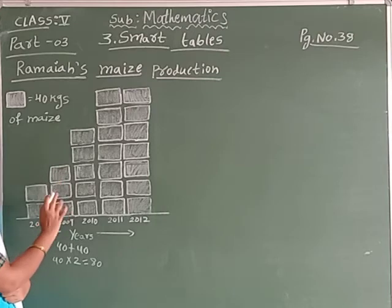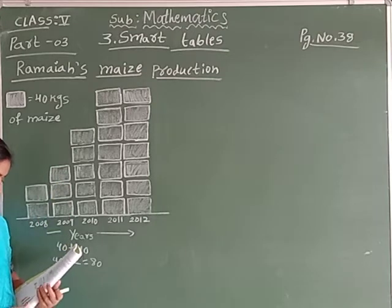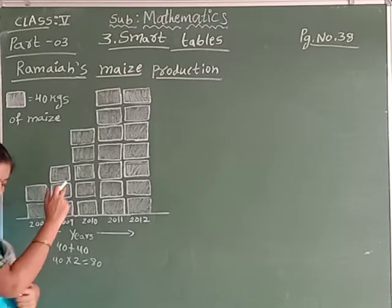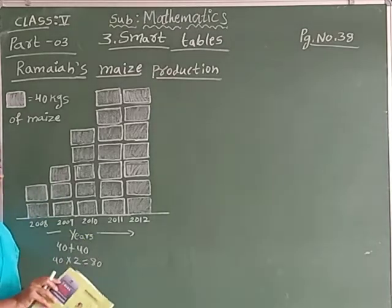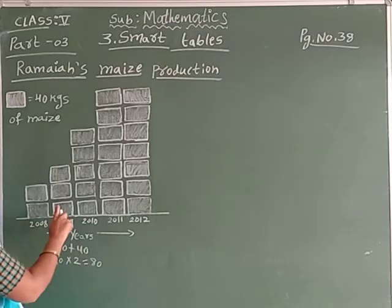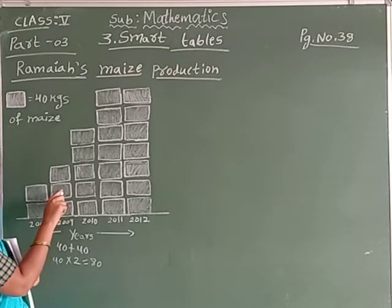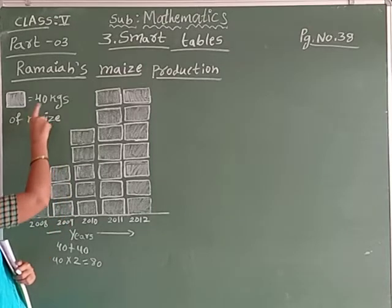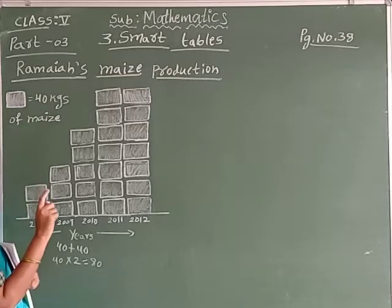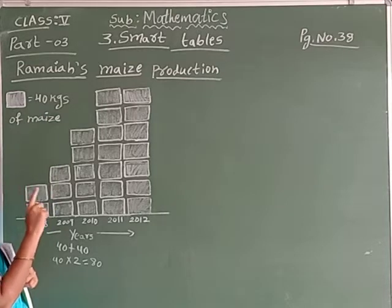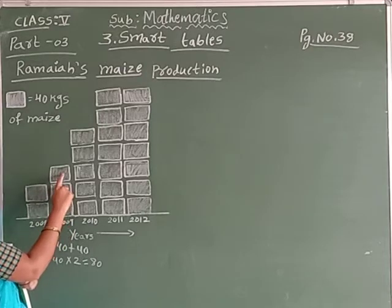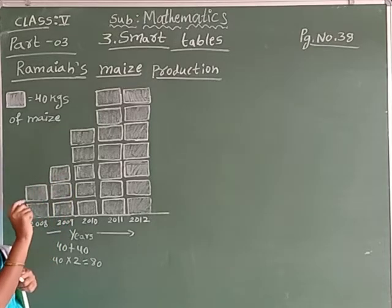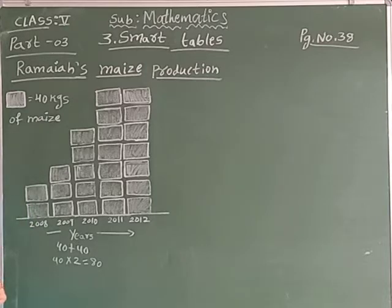In 2009 — see here, 40 plus 40... how many boxes are there? 3. So let's count: 3 boxes, each one 40. So 4 threes are 12 — that means 120 kg. Ramayana grows in 2009, 120 kg of maize in his field.